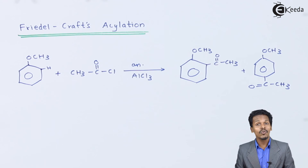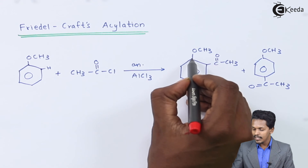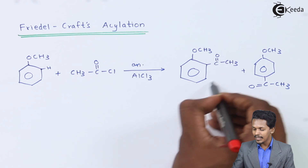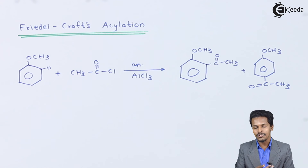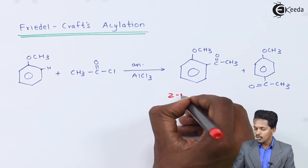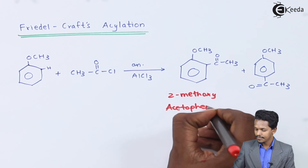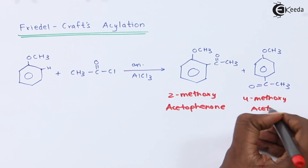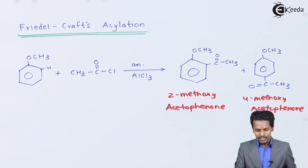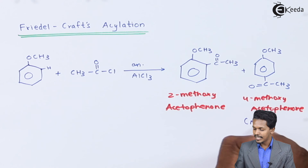The ortho product is named 2-methoxyacetophenone, as a methoxy group is attached at the second position of acetophenone. The para product is named 4-methoxyacetophenone. The major product obtained in Friedel-Crafts acylation of anisole is the para product, 4-methoxyacetophenone.